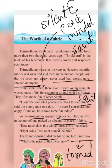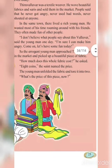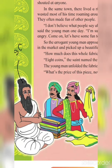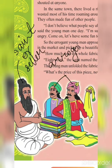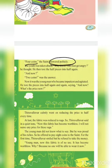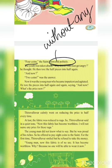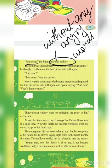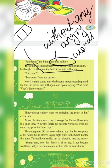The arrogant young man approached Thiruvalluvar in the market and picked up a beautiful piece of fabric. He asked the price of the cloth. The saint, who was sitting, was the seller, and the two persons came not to purchase the clothes but to make fun of the saint. When asked about the price of the piece of cloth, Thiruvalluvar said 'four coins' very politely, without any angry words.